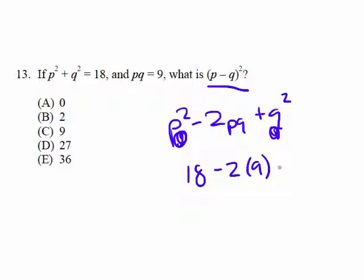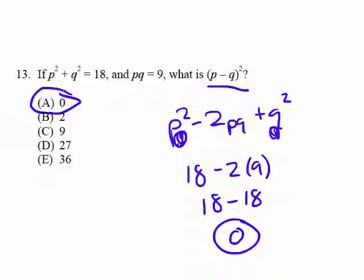Well, 18 minus 2 times 9 is 18 minus 18, which is 0. So p minus q squared is 0. Easy!